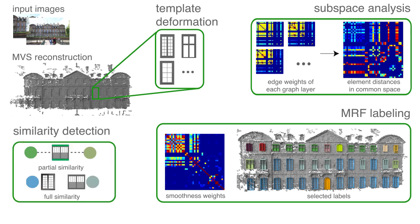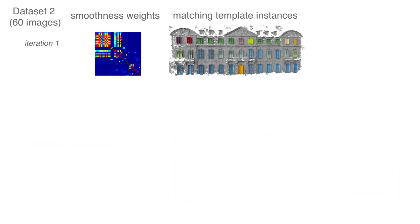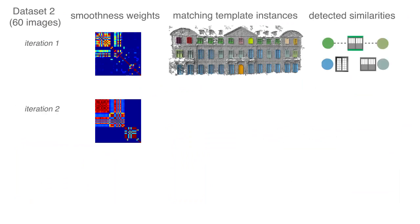We detect similarities in the deformation parameters of the matching template instances. We use these similarities to consolidate data across multiple elements and repeat template deformation.